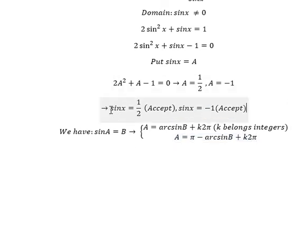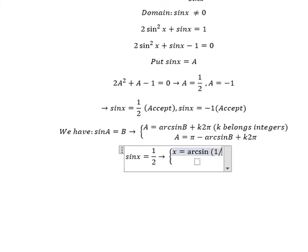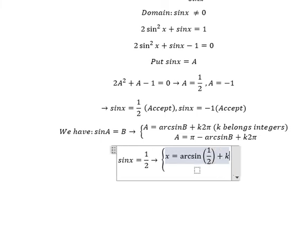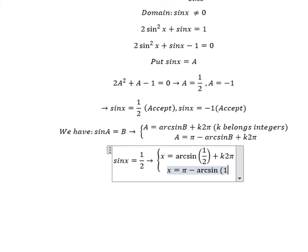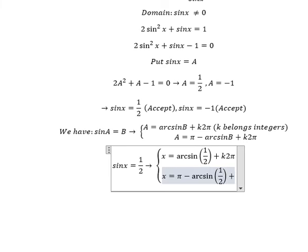And now for this one we have x equals arcsin(1/2) plus k times 2π, and the second one is π minus arcsin(1/2) plus k times 2π.